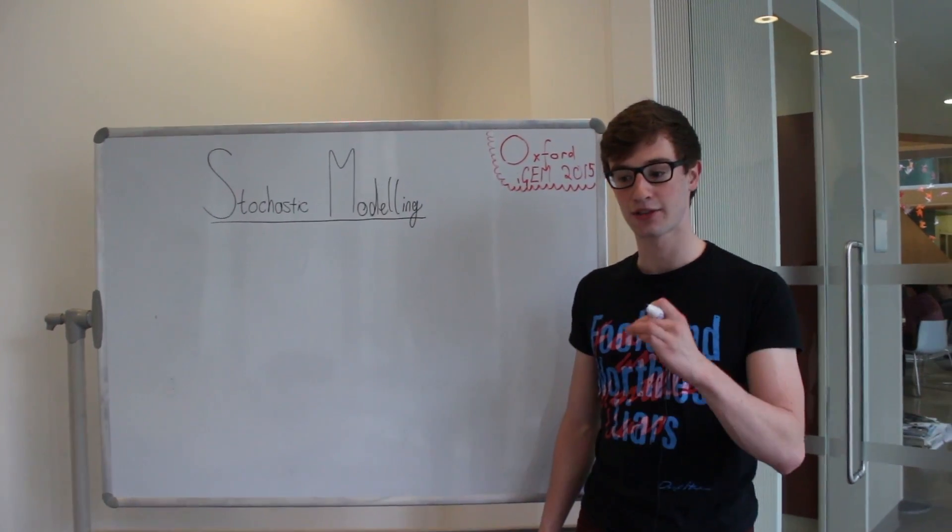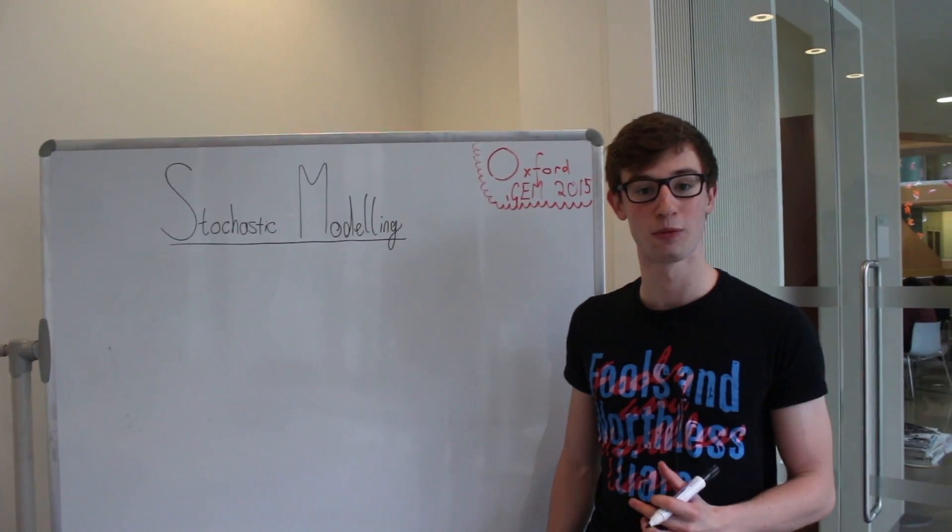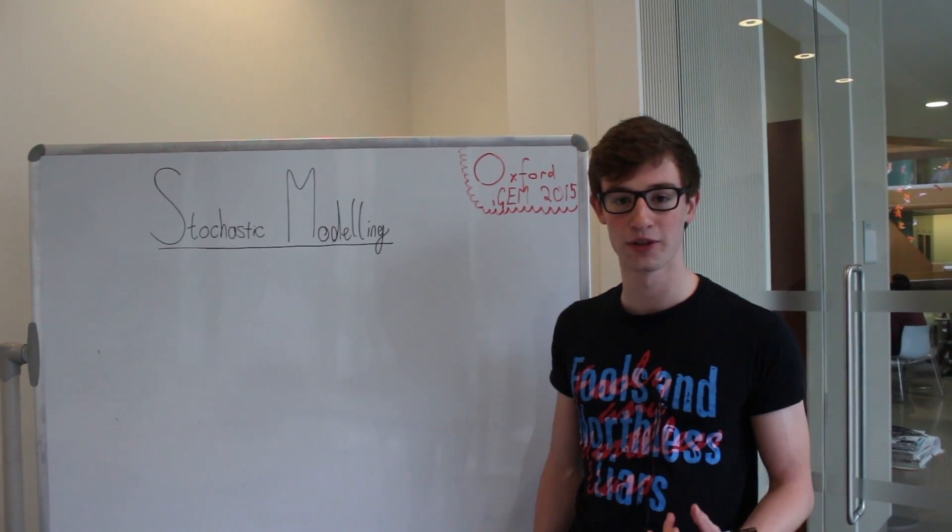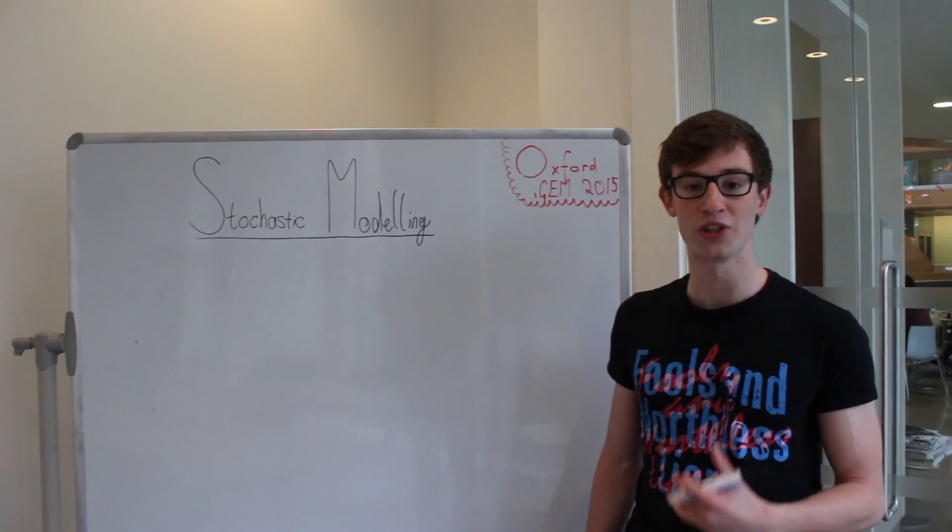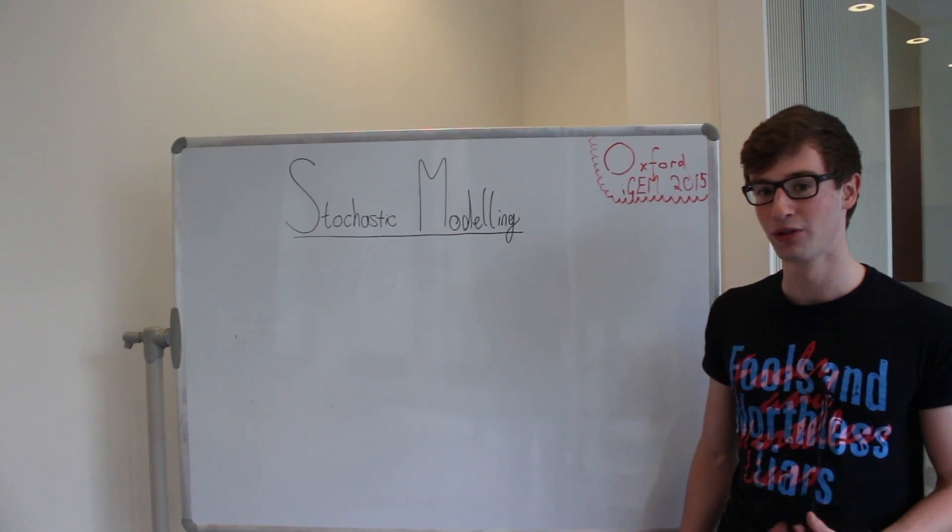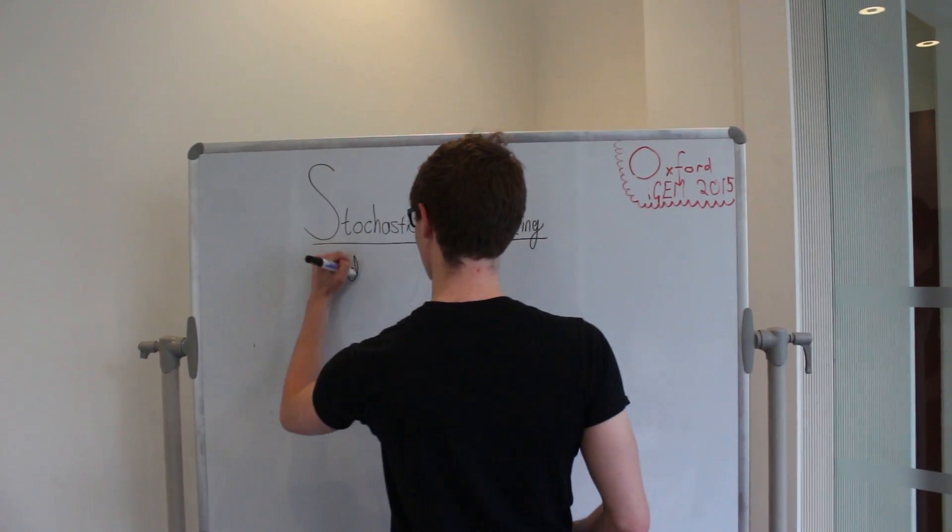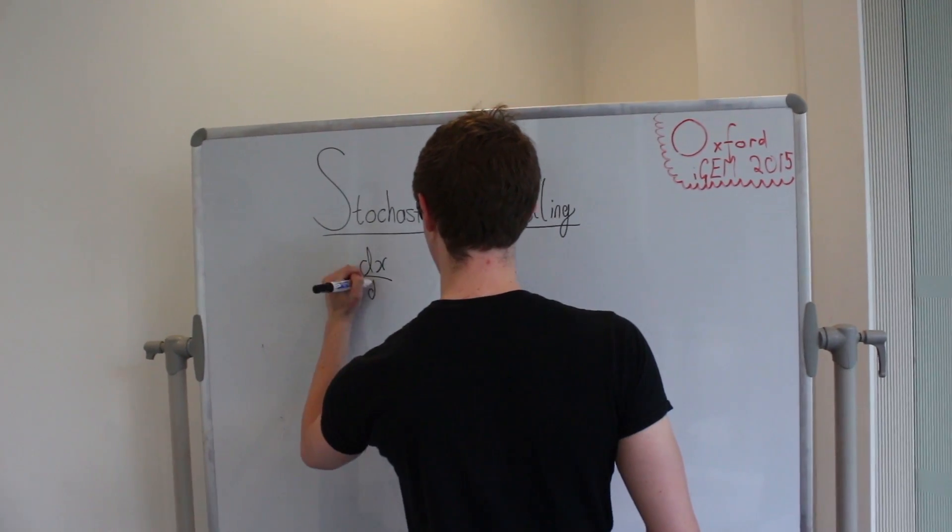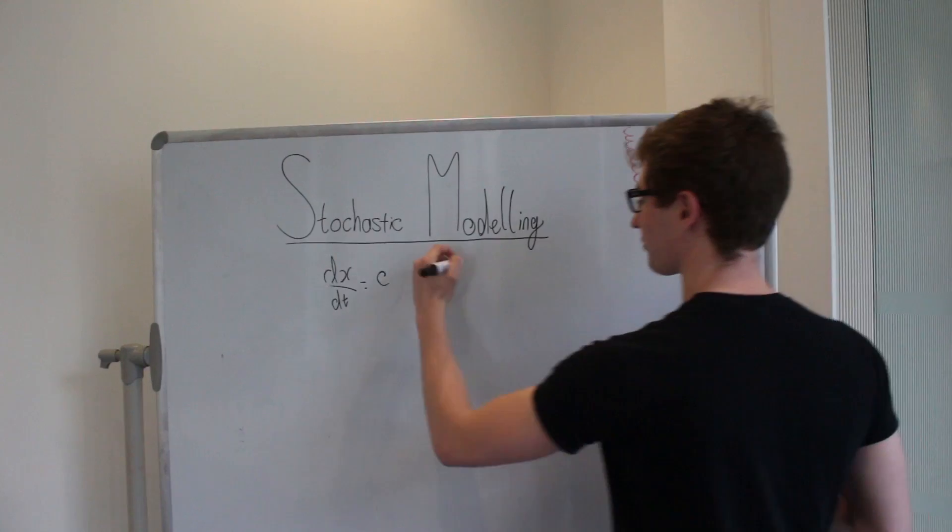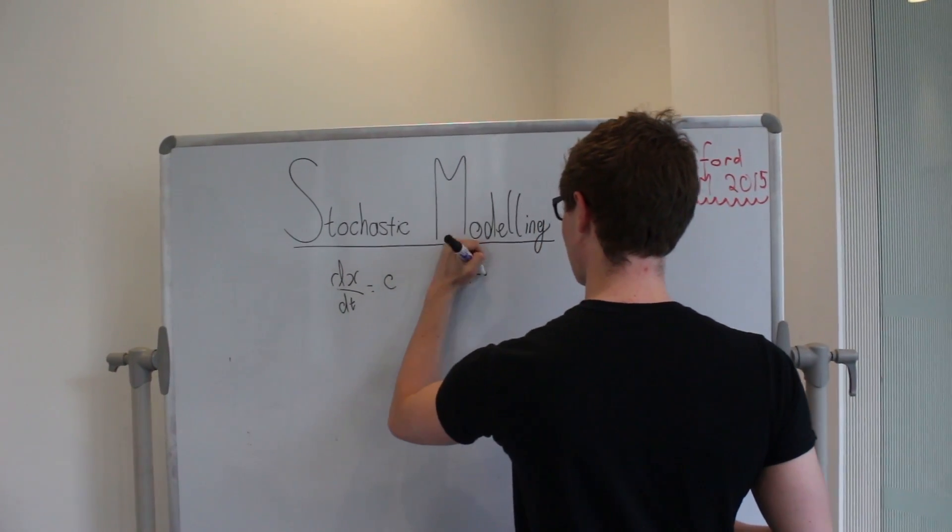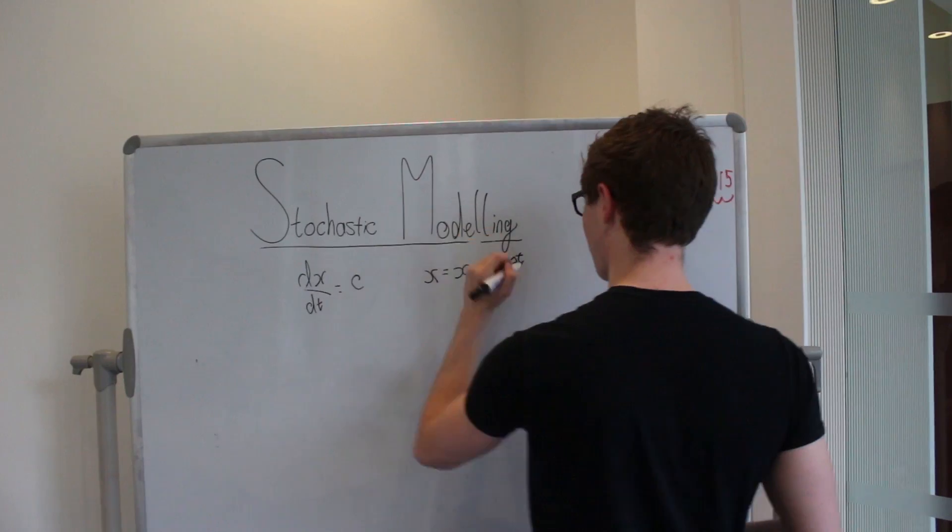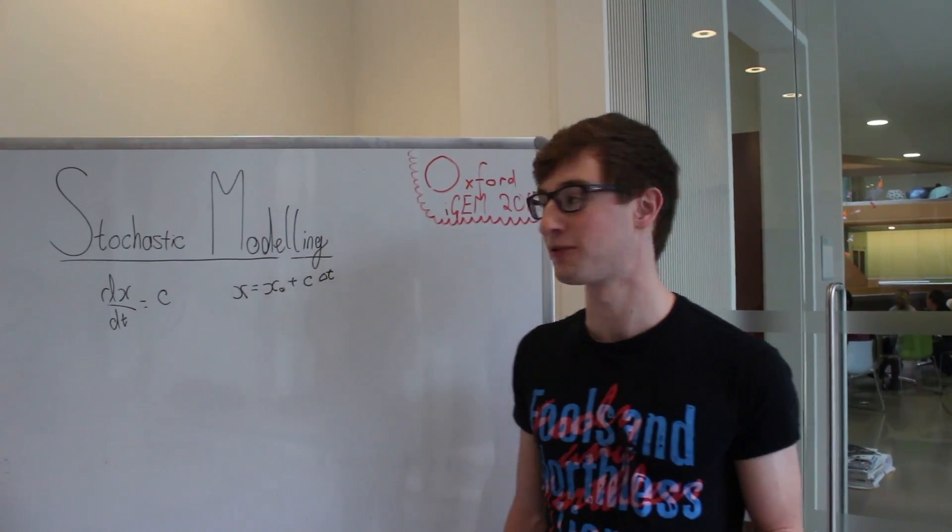Stochastic modeling is used for any system where there are a small number of particles and when there's a random element involved. It's different to deterministic models which evolve simply according to the standard differential equations that we're used to. For example, we could go as basic as possible and say dx/dt is some constant speed c, which of course solves to our position is our initial position plus our speed times dt, the amount of time that we leave it for.